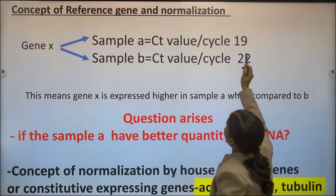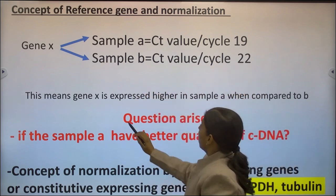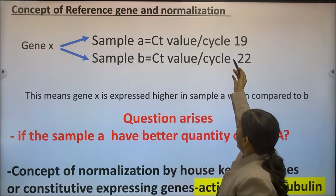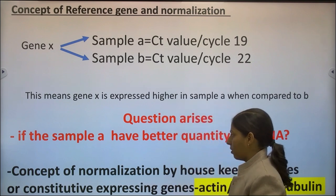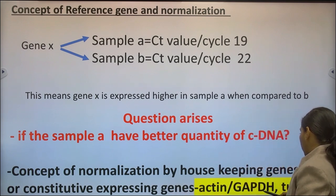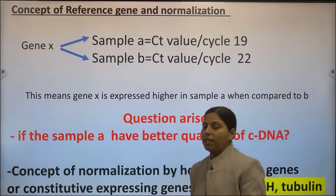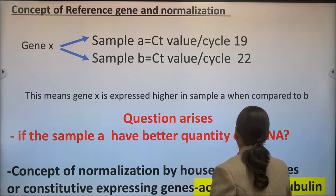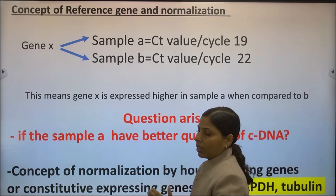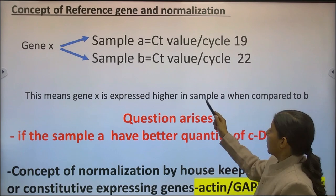The concept of reference genes and normalization: suppose sample A has a CT value of 19 and sample B has a CT value of 20 — gene X expression would appear higher in sample A, but if sample A already has a higher amount of cDNA, it will generally give higher gene expression regardless. This introduces the concept of normalization using housekeeping genes — also called constitutively expressed genes — such as actin, GAPDH, tubulin, and ribosomal genes. These endogenous genes are expressed constitutively across all tissues and correct for sample-to-sample variation.